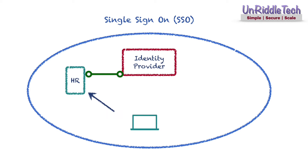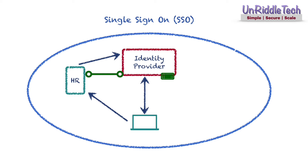Assume that you configure trust between the identity provider and the HR application. When the user tries to log into the HR application using their web browser, it will redirect to the identity provider requesting authentication. The identity provider provides a login screen where the user can type their credentials. You may configure multi-factor authentication to make the process more secure. Once the identity provider authenticates the user successfully, it will send a token or claim to the user, which is then submitted to the HR application.